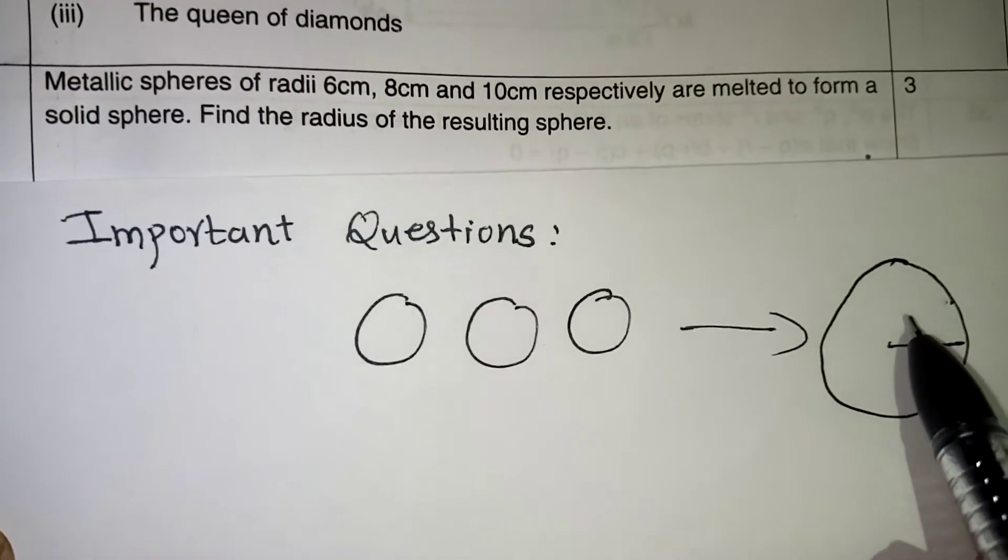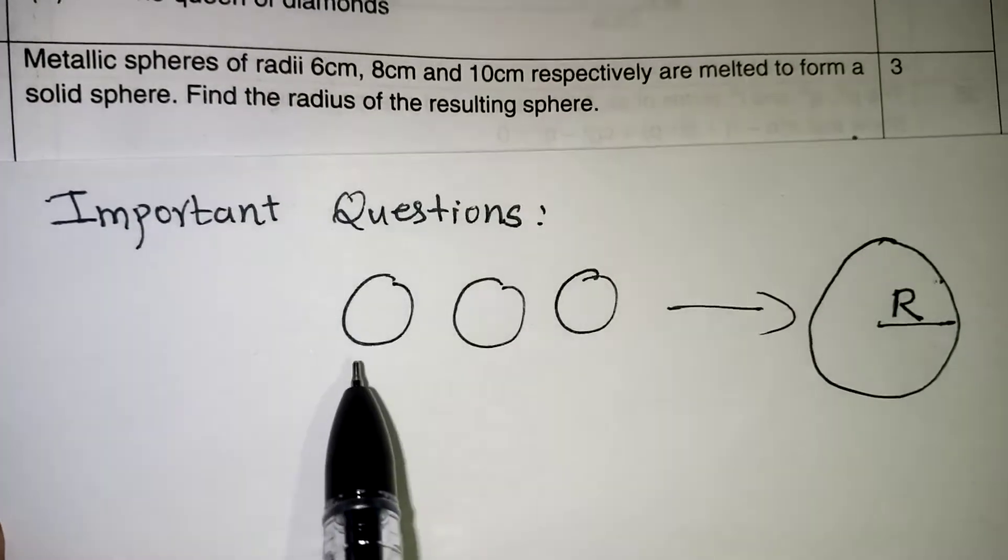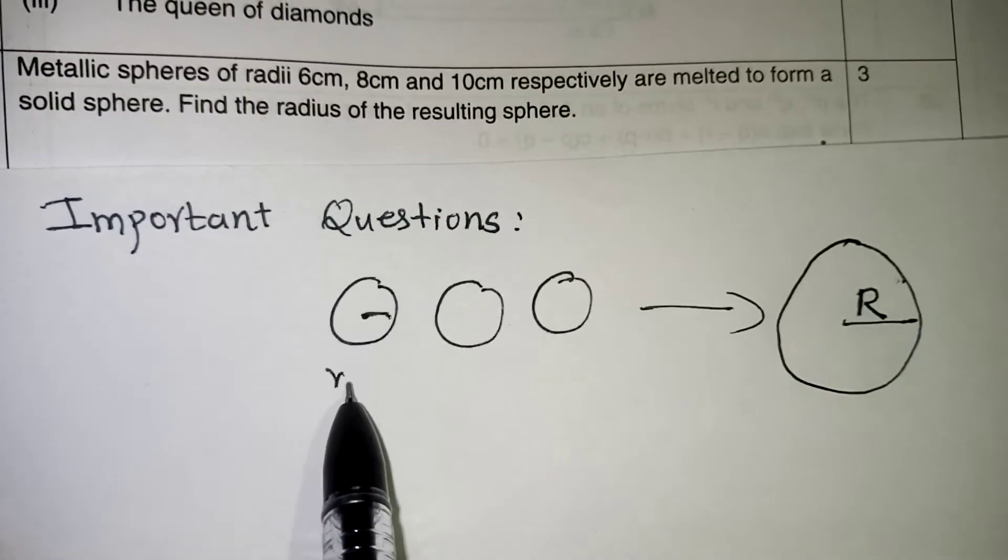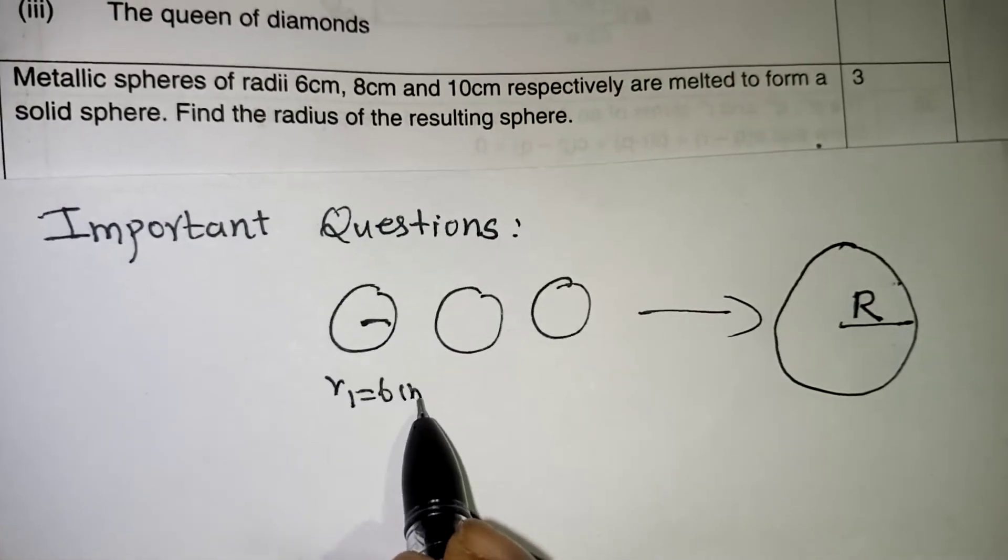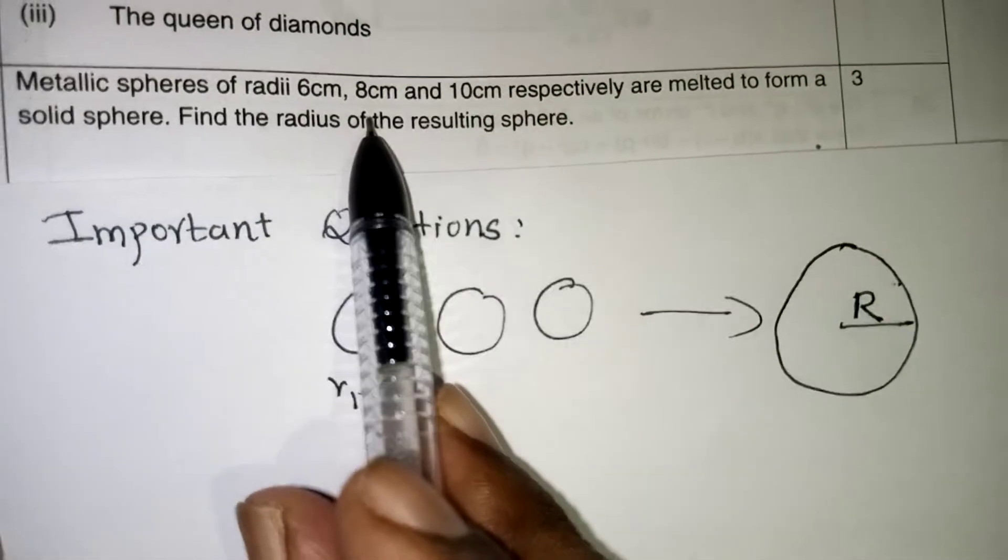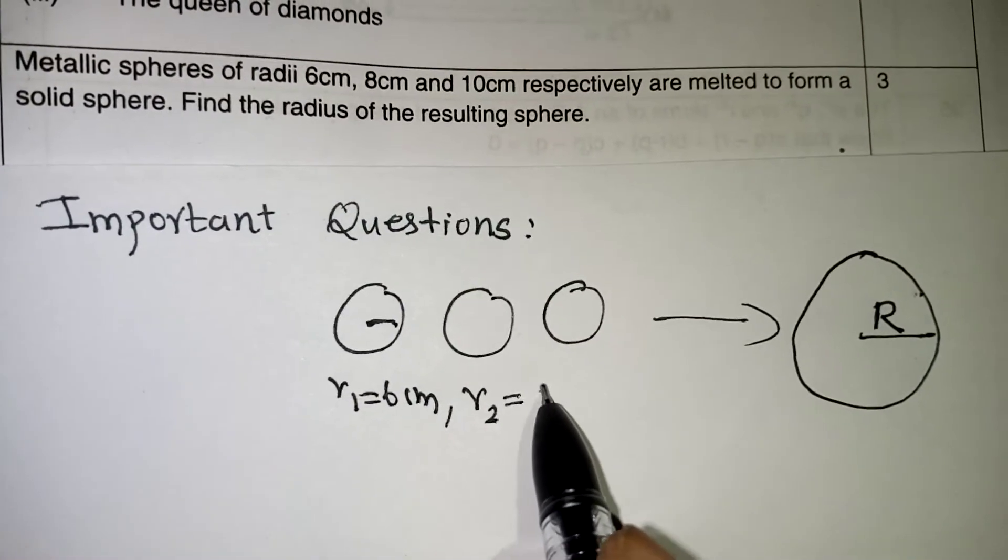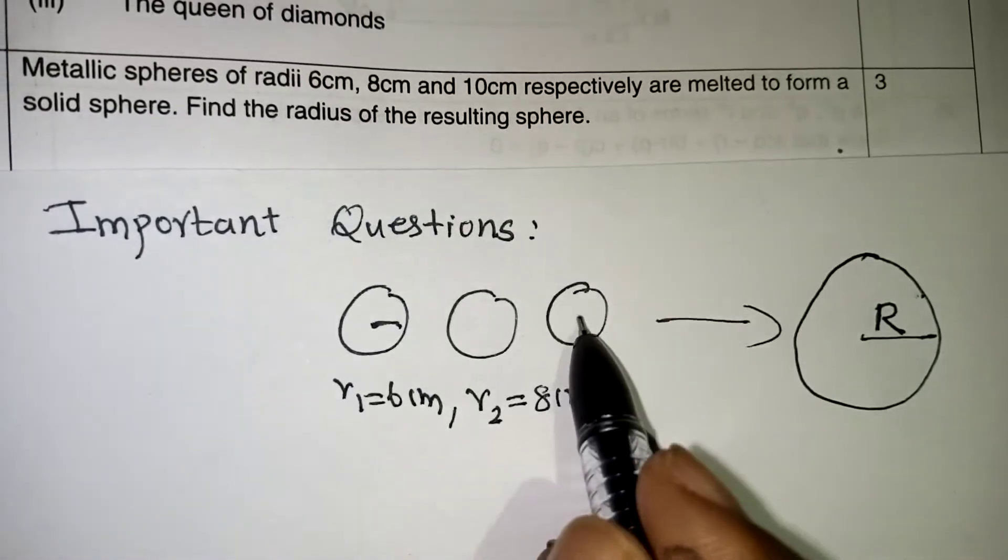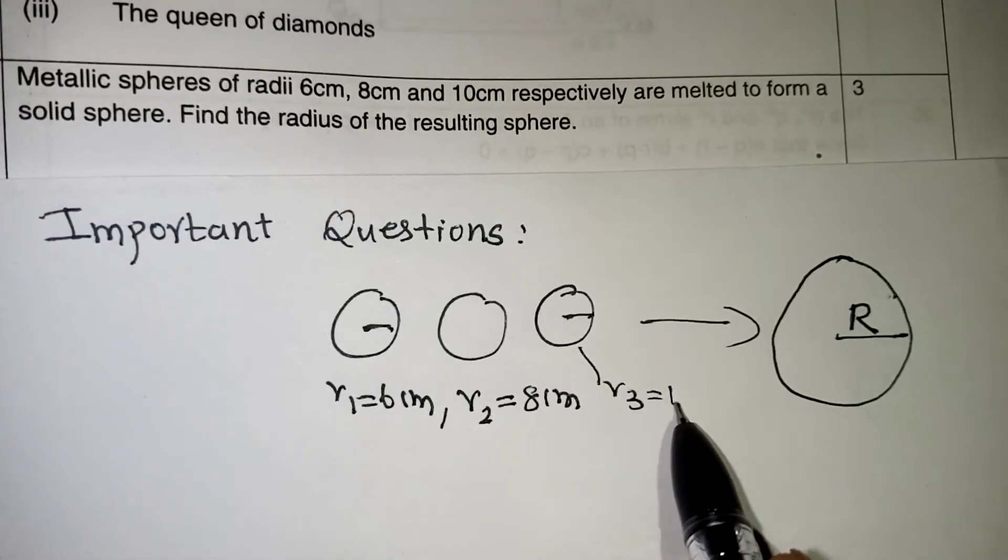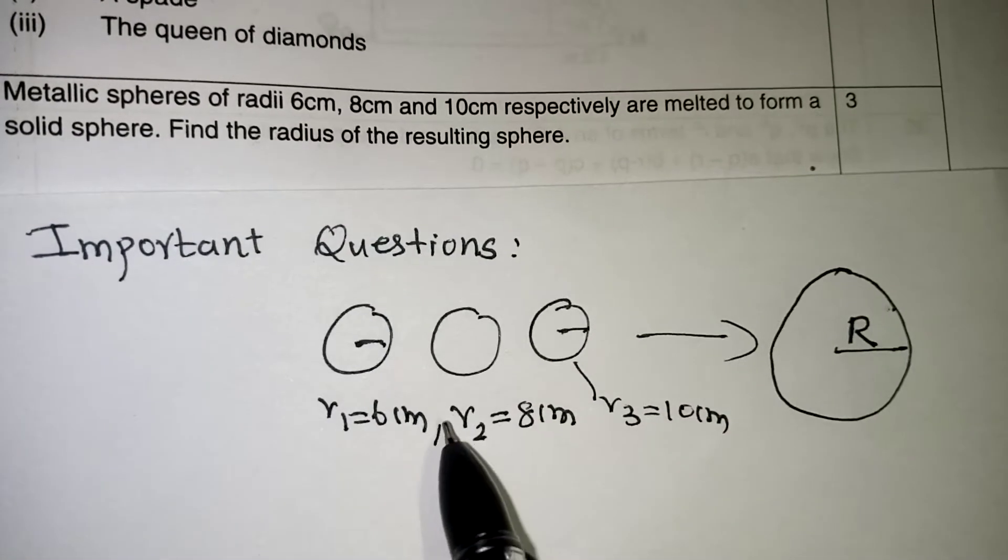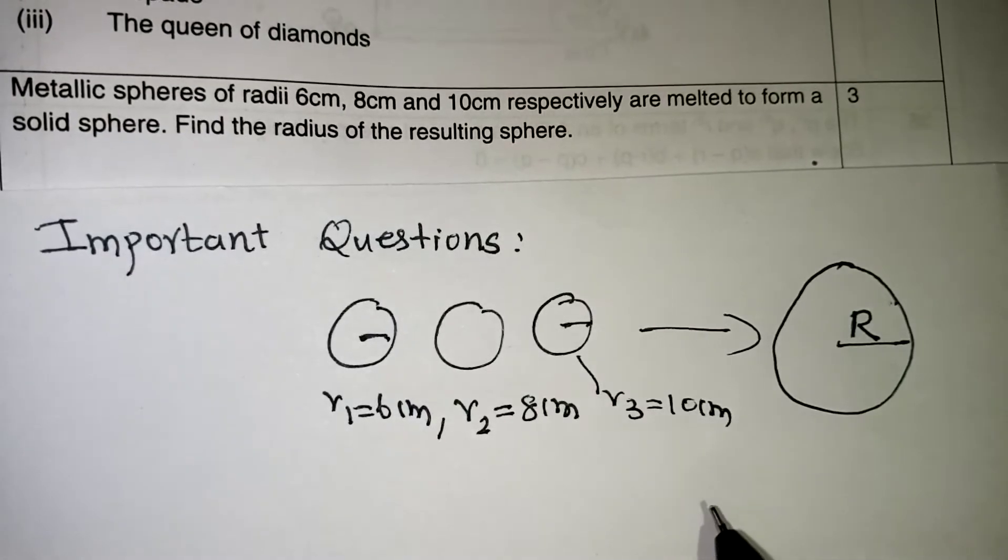Let us consider the big sphere radius is capital R. The first sphere radius let us take as R1 that is given as 6 cm. So first sphere radius is 6, second is 8 and the third one is 10. Let us assume the second sphere radius is R2 that is 8 cm. Likewise for the third sphere let us consider R3 that is 10 cm. So all three spheres they are going to melt, they are going to make a new one. That radius we are going to take as capital R.